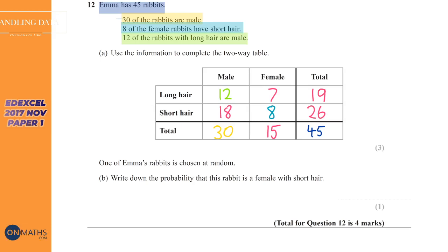It's next question says, one of Emma's rabbits is chosen at random. Write down the probability this rabbit is female with short hair. So female with short hair, there's eight of them. So it's eight over, and this is the total amount of rabbits. The total amount of rabbits is 45. So that's how you make the probability. Find the one you're looking for, which is female with short hair, which there's eight of them, over the total amount, which would be 45.